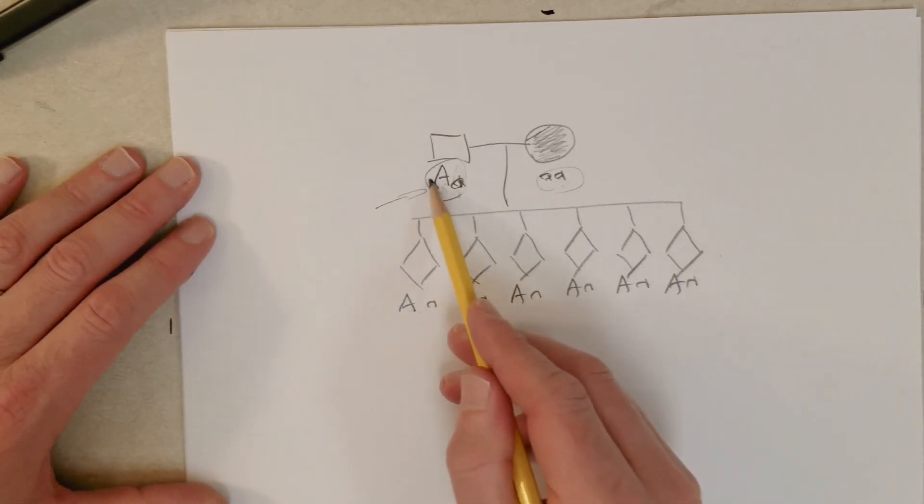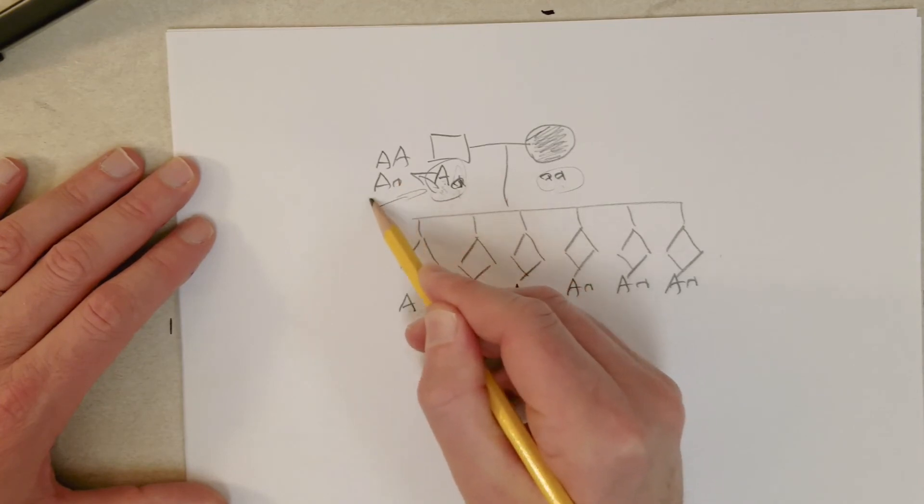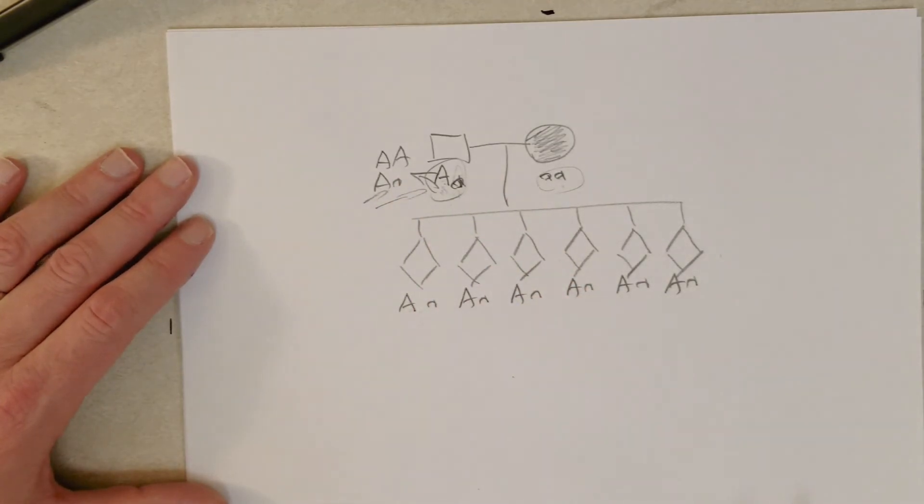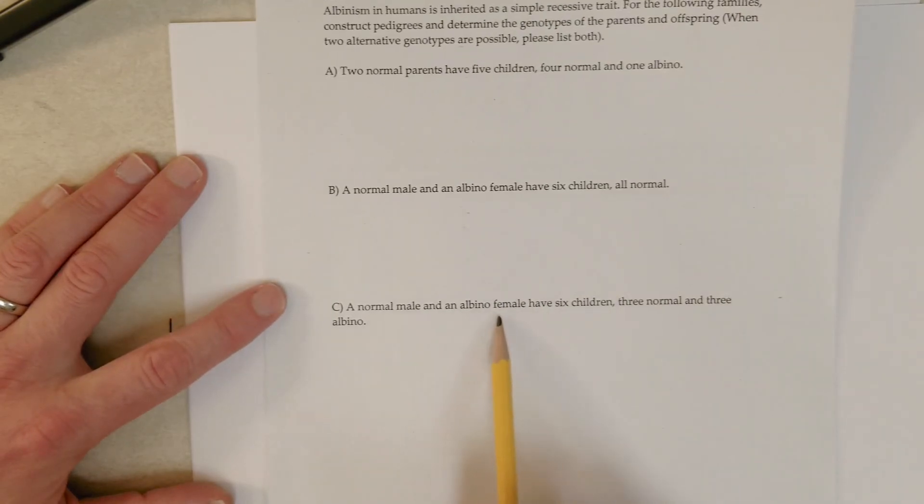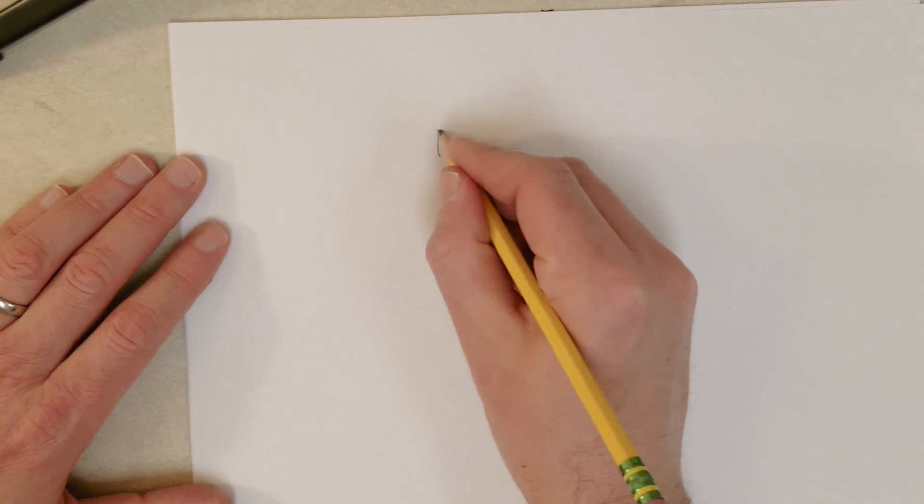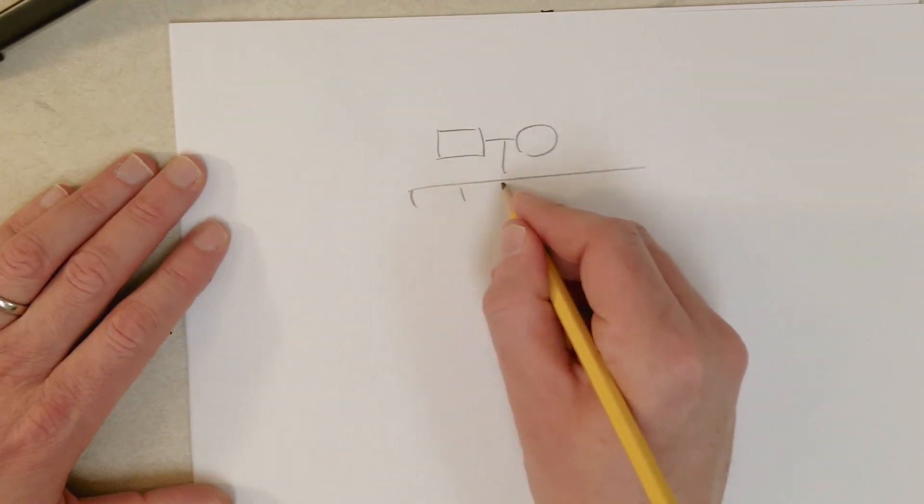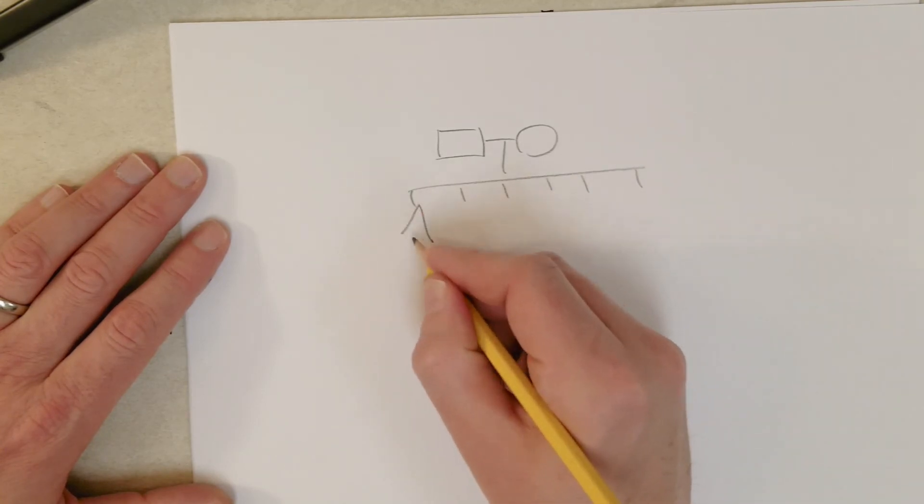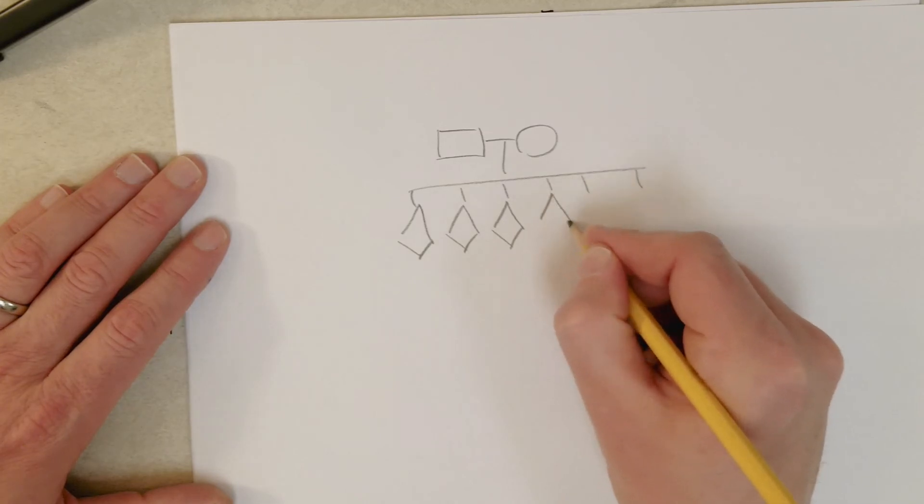So for this one, we would say big A big A, maybe big A little a. Part C of this question: a normal male and an albino female have six children, three normal and three albino. So that one's a little easier, right? I'm going to go all diamonds here because we don't know the sexes.